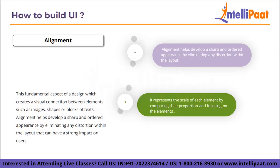The first type is alignment. Alignment is very necessary for each and every document you create, and the same applies when creating interactive UI. This fundamental aspect of design creates a visual connection between elements such as images, shapes, or blocks of text. It helps develop a sharp and ordered appearance by eliminating distortion within the layout, which can have a strong impact on users.